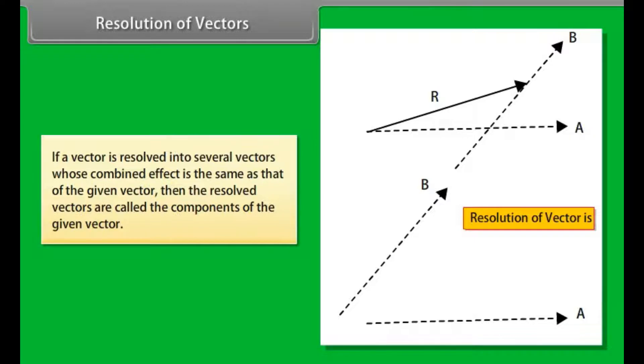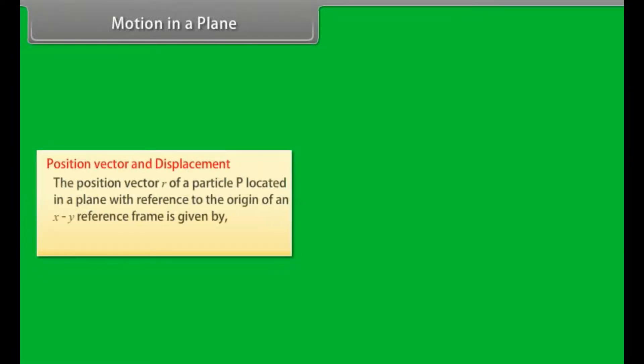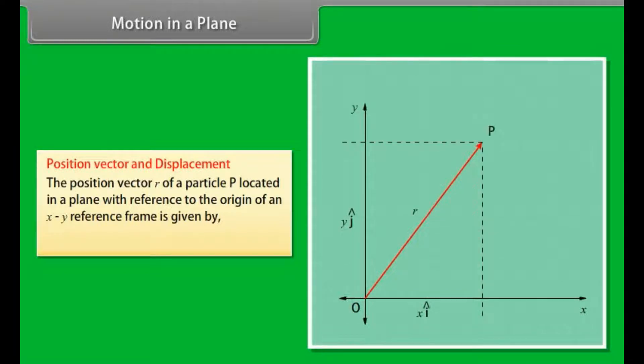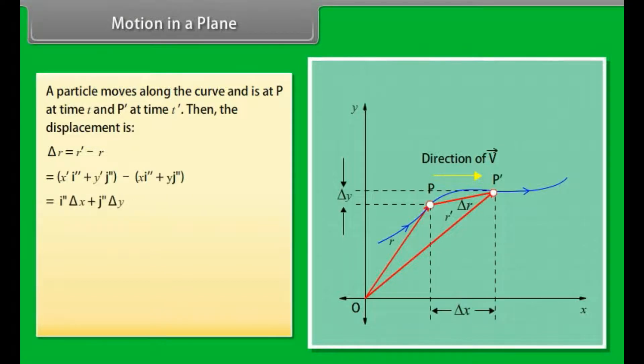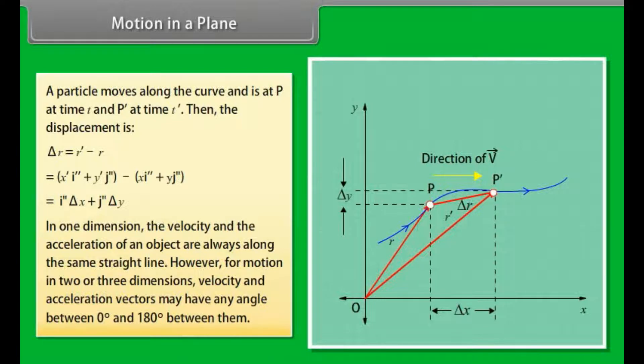Resolution of vectors. The position vector r of a particle p located in a plane with reference to the origin of an xy reference frame is given by r = xi + yj. A particle moves along the curve and is at p at time t and p' at time t'. Then the displacement is Δr = r' - r. By putting values we get Δr = i·Δx + j·Δy. In one dimension, the velocity and the acceleration of an object are always along the same straight line. However, for motion in two or three dimensions, velocity and acceleration vectors may have any angle between 0° and 180° between them.